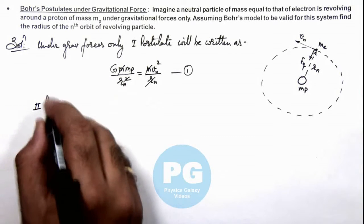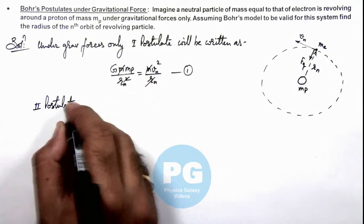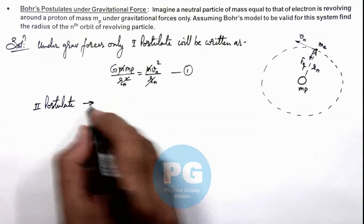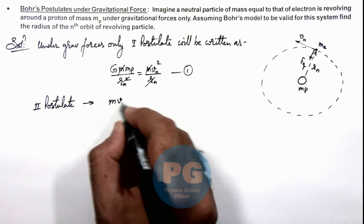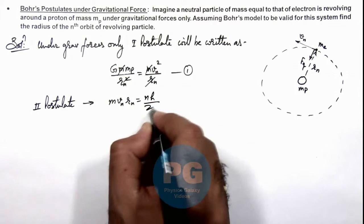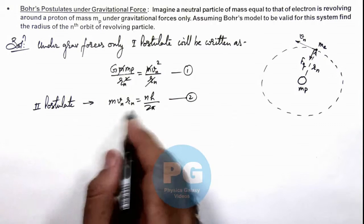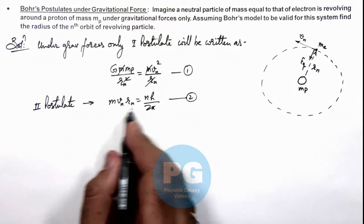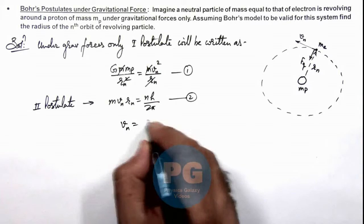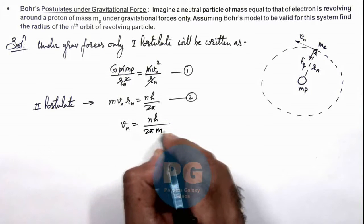And the second postulate was given for conservation of angular momentum, which we can write as m vn rn equals n times h over 2π. That is our second equation. And from this equation, we can see the value of vn is given as n h over 2π m rn.